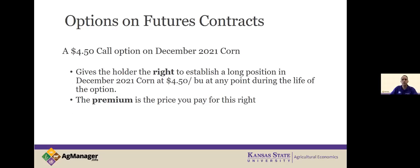For example, I could go out and buy a $4.50 call option on December 2021 corn. The December 2021 corn contract is for 5,000 bushels of number two yellow corn that expires in December. The call option gives me the right to establish a long position. The $4.50 strike price means that's the price at which I can establish that long position. The premium is what I have to pay for this right.